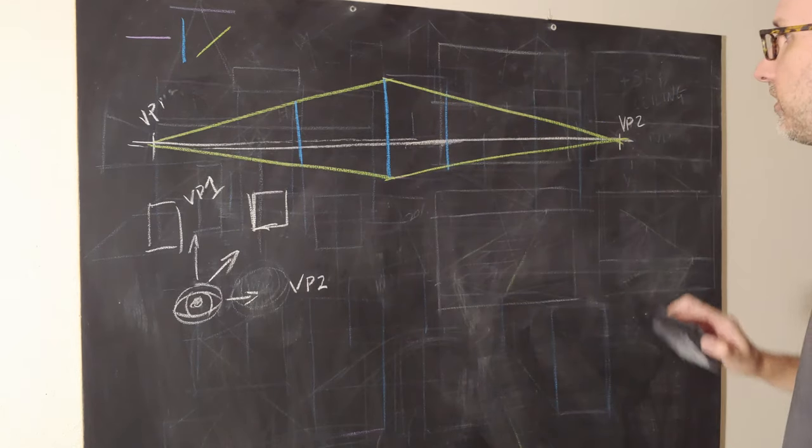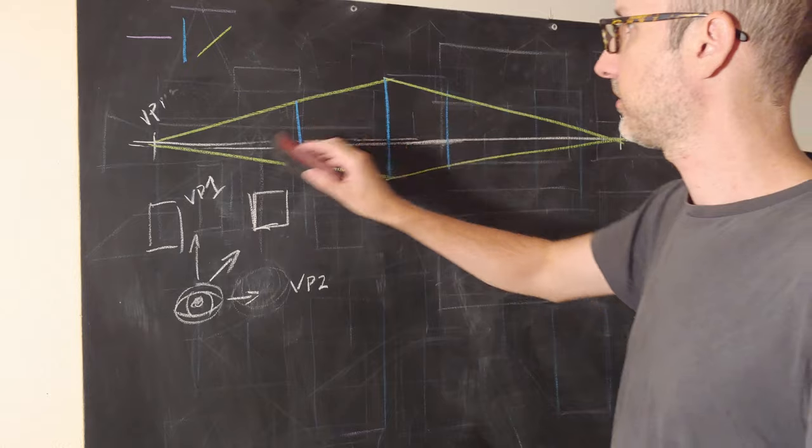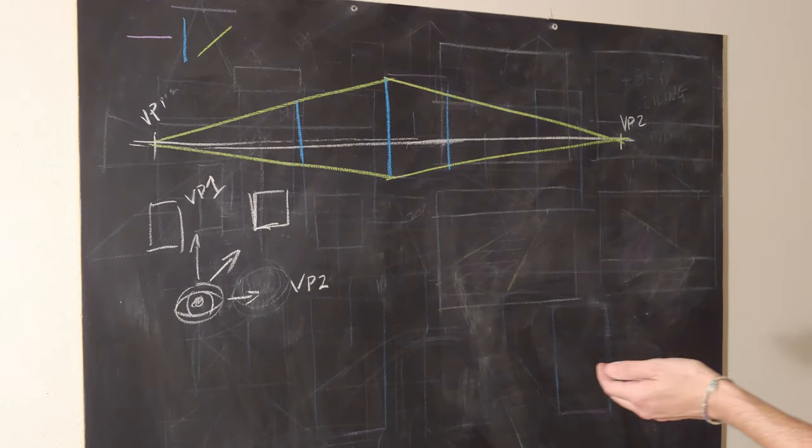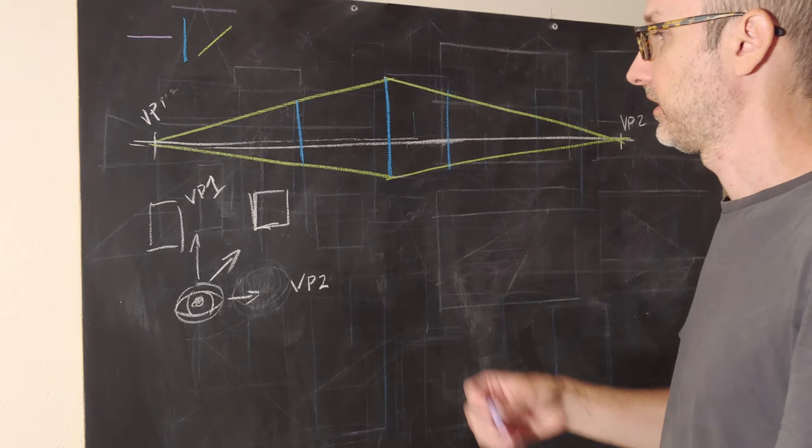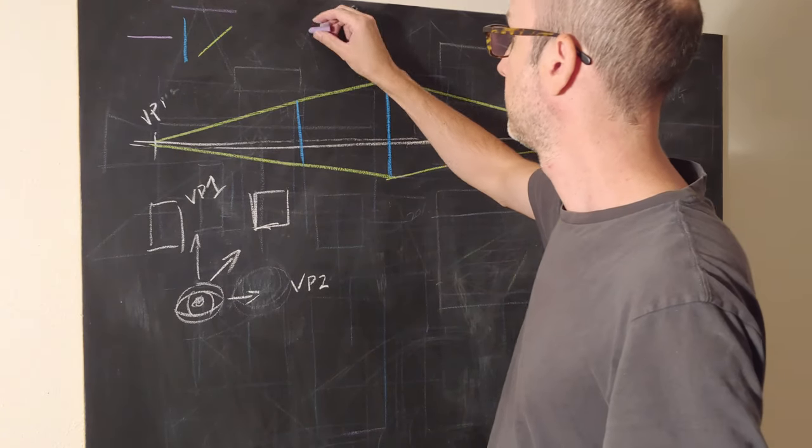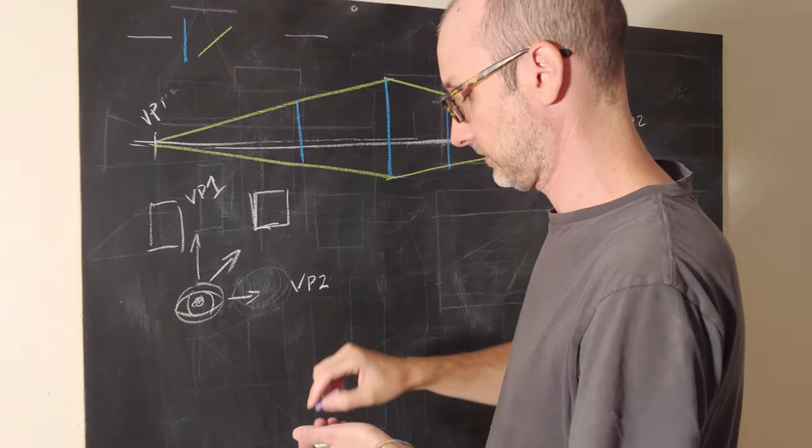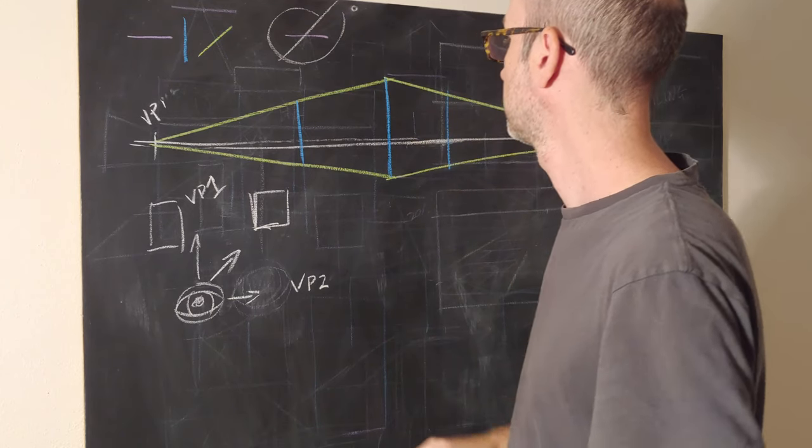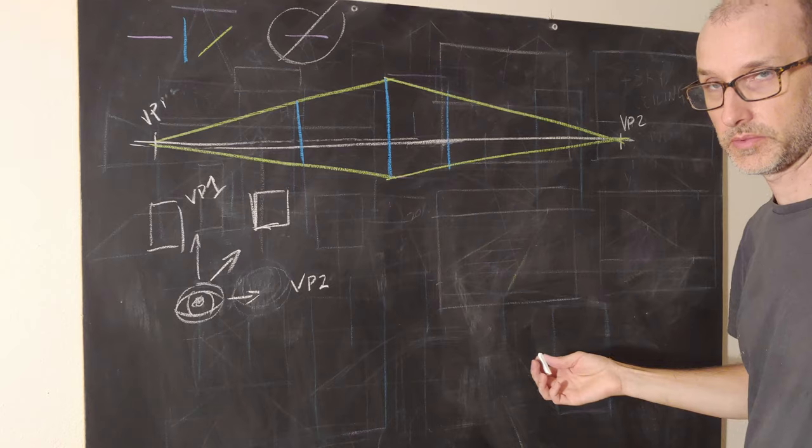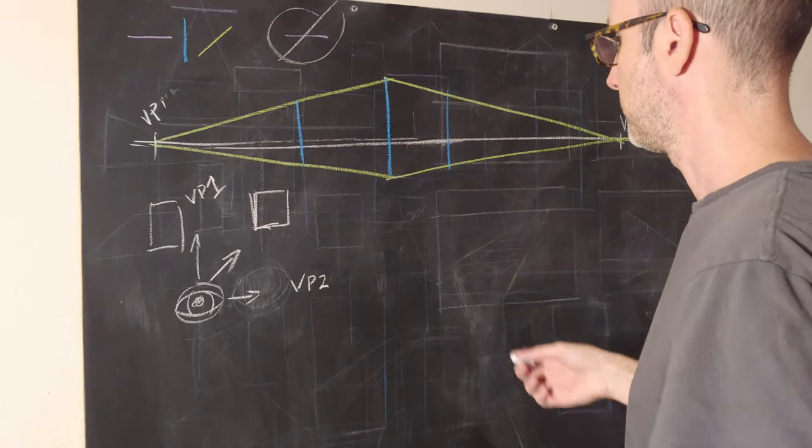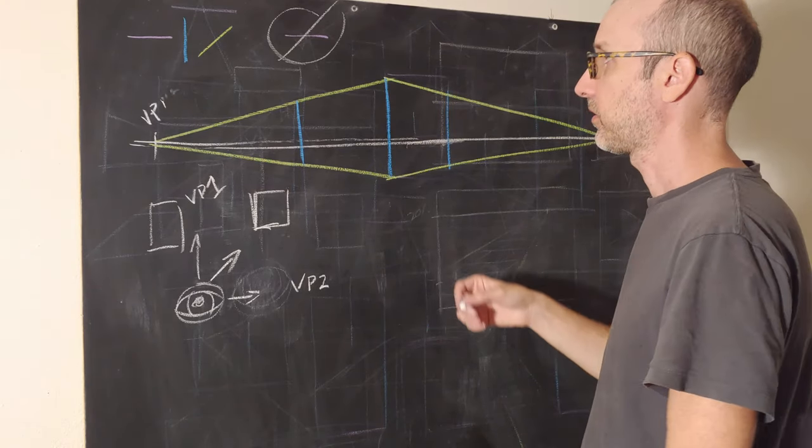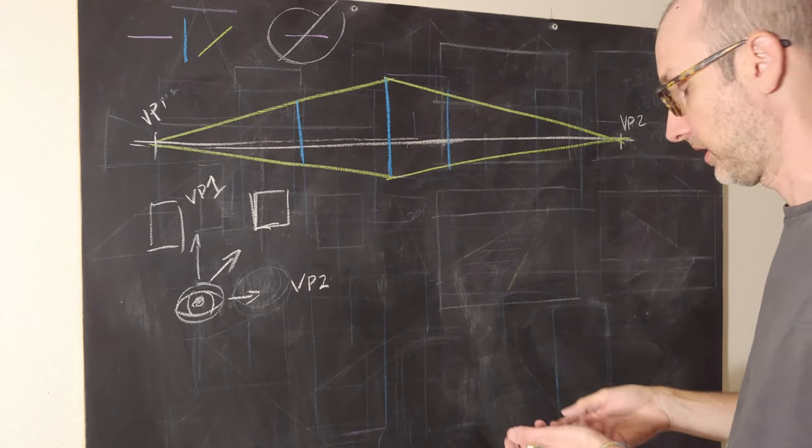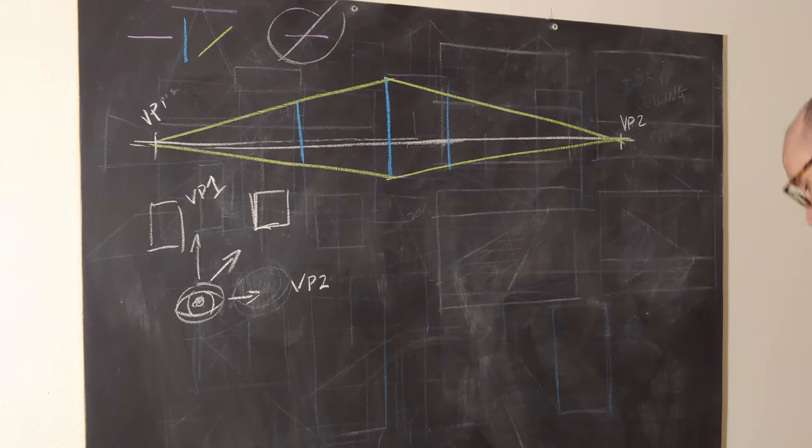So we've added the complexity of another vanishing point, but we've also simplified because now we no longer have to deal with horizontal lines. And the cool thing about two-point perspective is that in two-point, our horizontals are gone, for the most part, with exceptions. If you add in another object that's oriented differently, of course, then you might need a horizontal. But for the most part, you're just going to eliminate those.